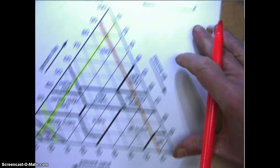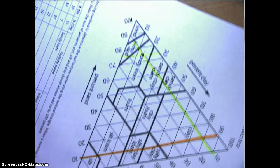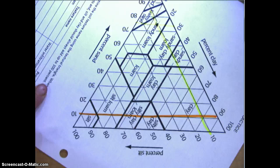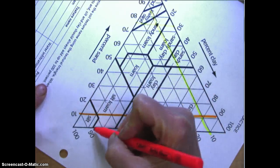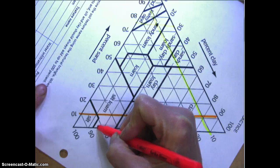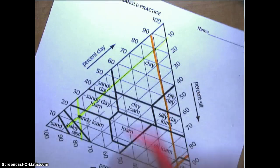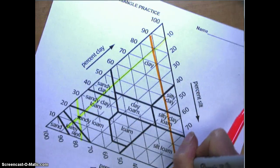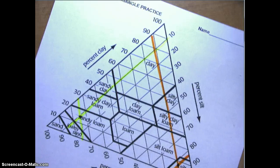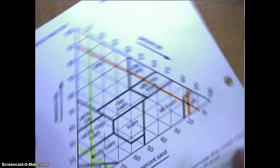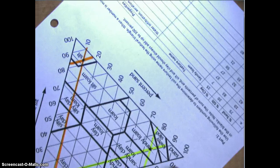Now we're going to go to 83% silt. You can turn it to the silt side and find 83. Here's 70, here's 80, here's 90. You're going to go to the left, so 83 is probably a little bit closer to 80.